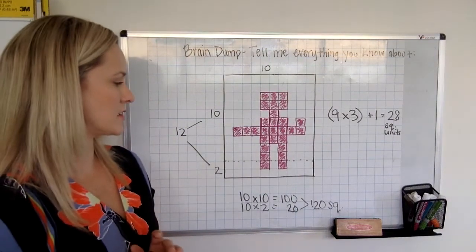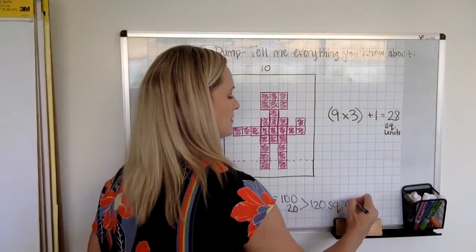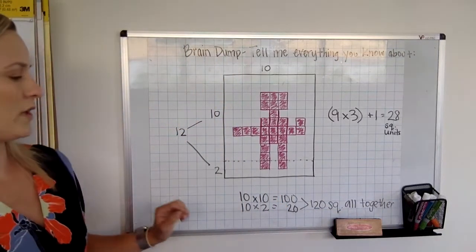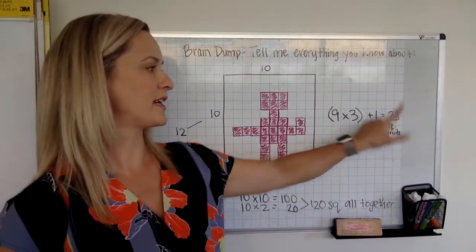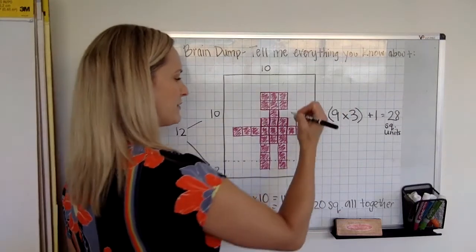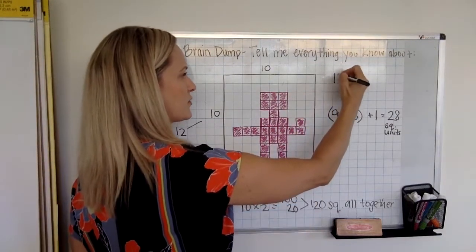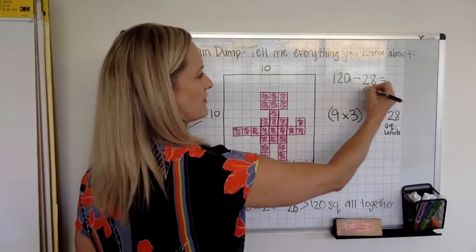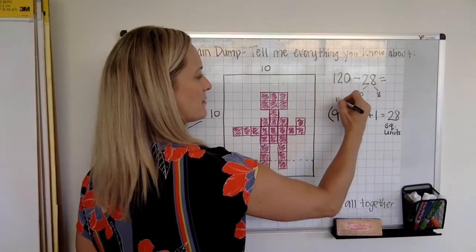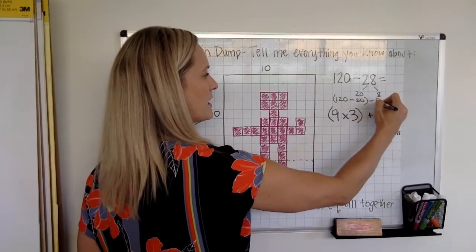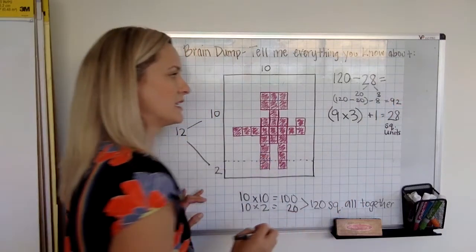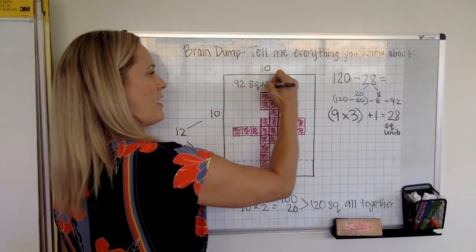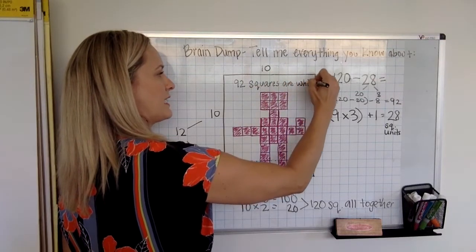Maybe some of you thought, well, if there were 120 squares all together and 28 of them were pink, maybe you tried to figure out how many were white. So maybe you did 120 minus 28 equals - I bet some of you did minus 20 first and then minus 8 next. So 120 minus 20 first, then minus 8 next, and you got 92. So maybe you were like, ooh, 92 squares are white and 28 are pink.